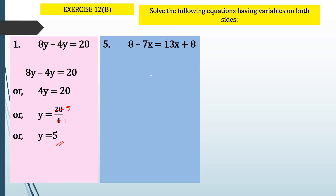It means the same thing. So I will write variables on the left-hand side. I will keep minus 7x, and this plus 13x when it comes to this side will become minus 13x. So minus 7x minus 13x equals 8, and this plus 8 becomes minus 8. Now 7x and 13x are like terms with the same sign, so they will add up. 7 plus 13 is 20, but with a negative sign, giving minus 20x equals 8 minus 8, which is 0.